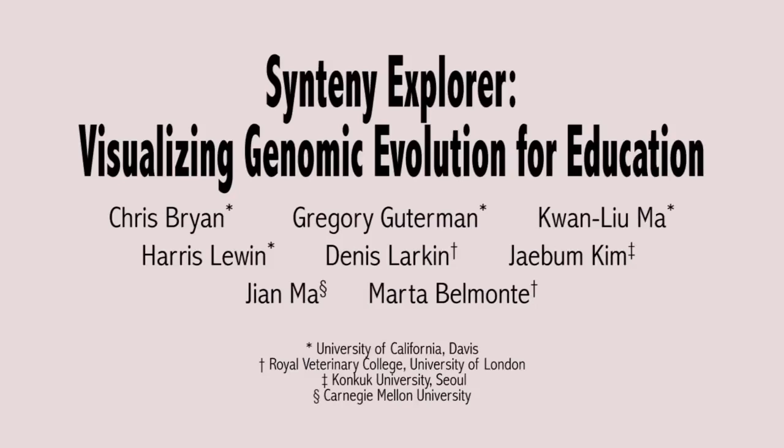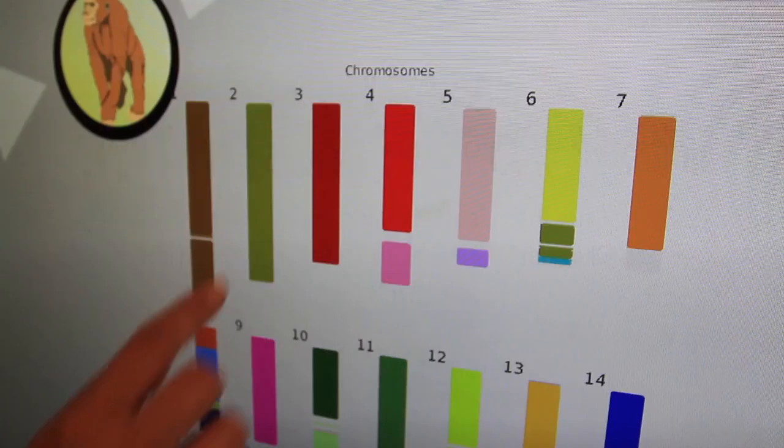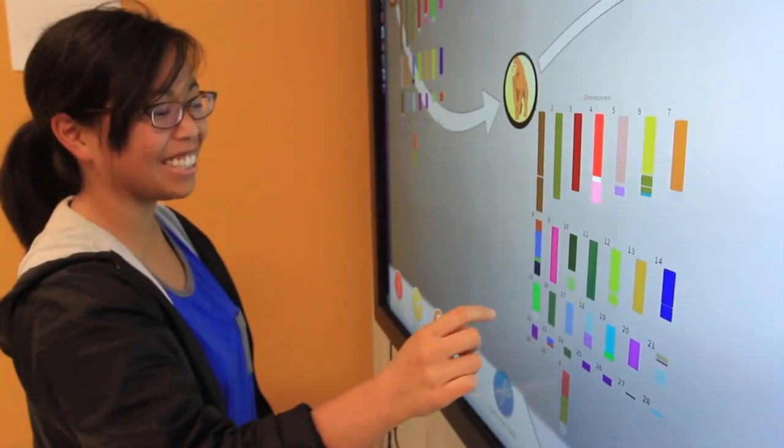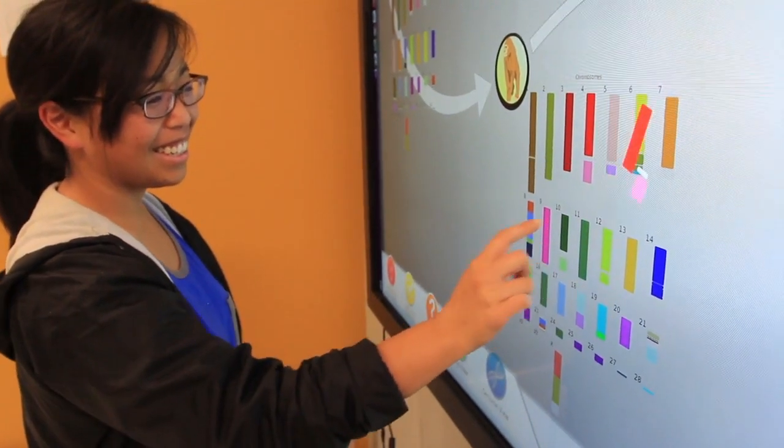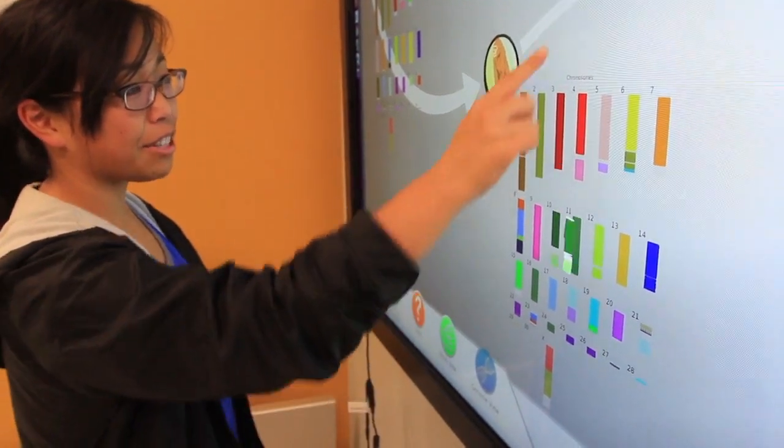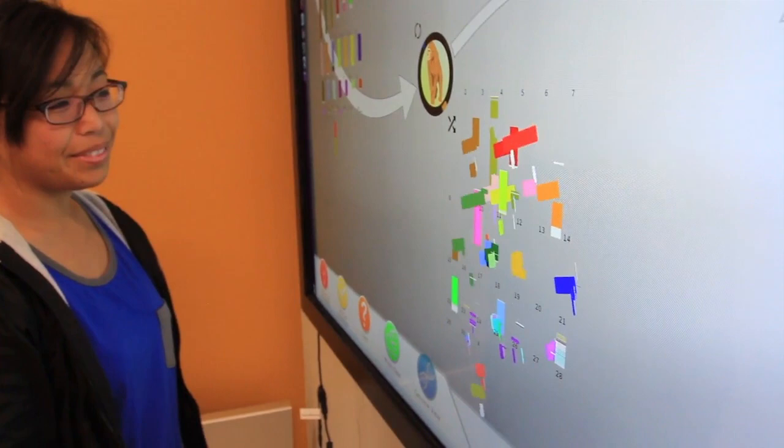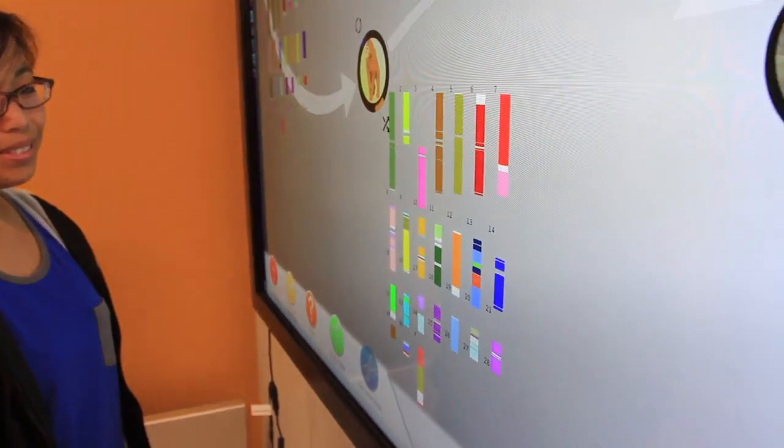Hello and welcome to Syntony Explorer, a system for visualizing genomic evolution and syntony block rearrangements. Syntony Explorer is designed to teach people about genome evolution and the preserved blocks of DNA that animal species share from extinct common ancestor species.